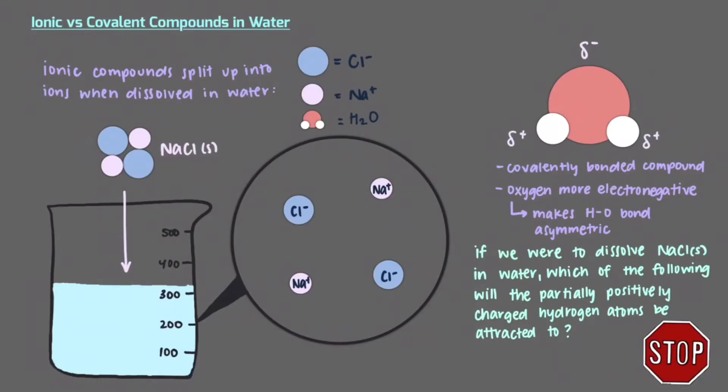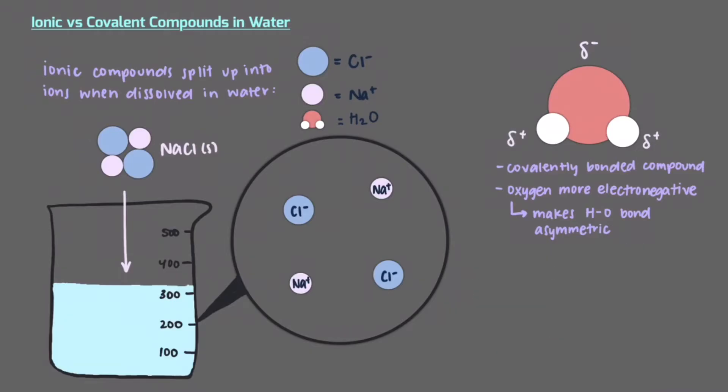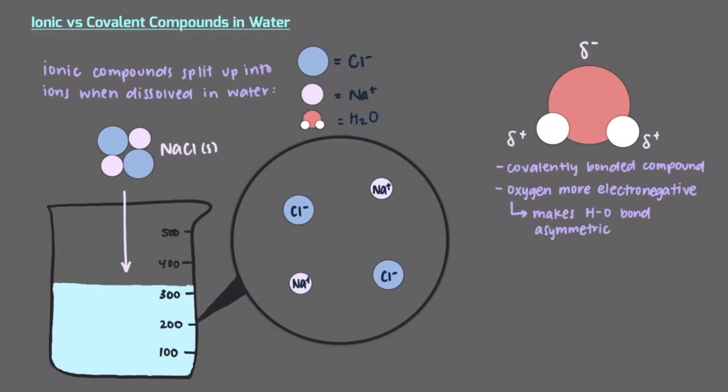If we were to dissolve solid sodium chloride in water, which of the following will the partially positively charged hydrogen atoms be attracted to? The partially positively charged hydrogen atoms in water will be attracted to the negatively charged chloride ions. Similarly, the partially negatively charged oxygen atom in water will be attracted to the positively charged sodium ion. We see again that opposite charges and partial charges attract.